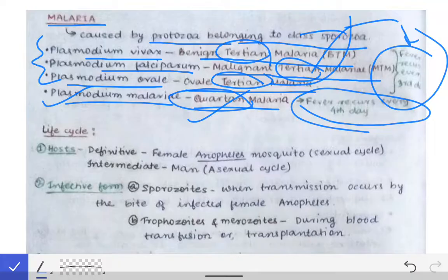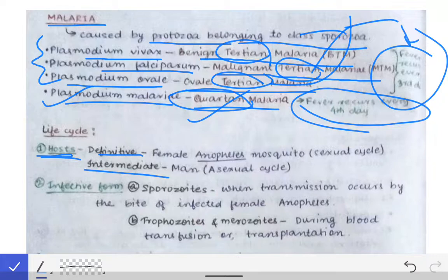Looking at the life cycle of Plasmodium, it completes in two types of hosts: the definitive host and the intermediate host. The definitive host is the one in which the sexual cycle completes, and the intermediate host is the one in which the asexual cycle completes. In the case of Plasmodium, the definitive host is the female Anopheles mosquito, because the sexual cycle completes there, while the intermediate host is man, because the asexual cycle completes in humans.